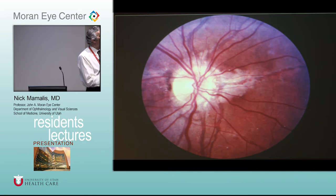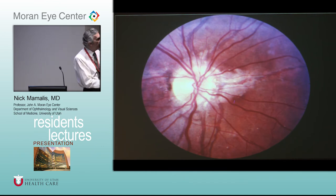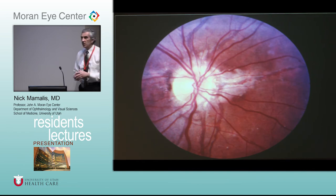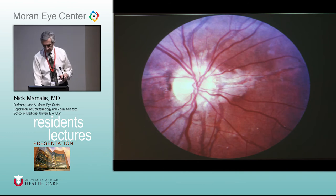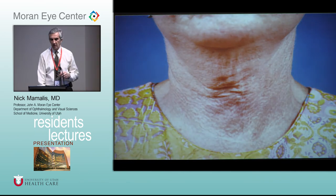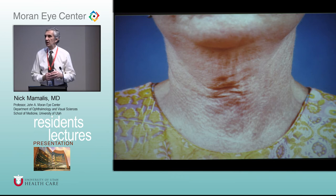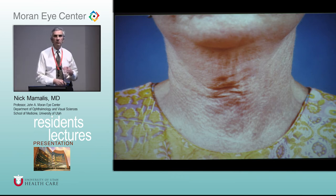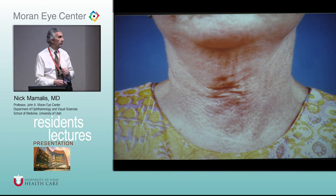What are angioid streaks? They're deeper — breaks in Bruch's membrane. At first glance you say, 'Oh, funny vessels,' but these are under the retina — they're breaks in Bruch's. What classically causes this? The classic plucked chicken look to the skin in a patient with pseudoxanthoma elasticum — a disease that affects elastic tissue. Bruch's membrane becomes brittle, can have focal breaks, and you get the classic plucked chicken appearance.